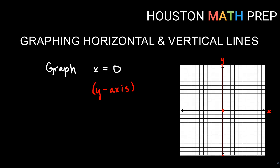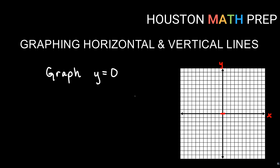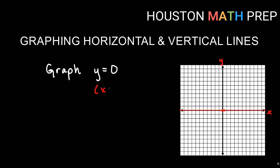Similarly, if we look at graphing the equation y equals 0: if I go up that's positive, if I go down that's negative. So at the origin, that's where y is 0, right there on the y-axis. And if I cut through y — perpendicular — that's going to give us a horizontal line. So that's basically going to give us the x-axis. So y equals 0 is the same as the x-axis.